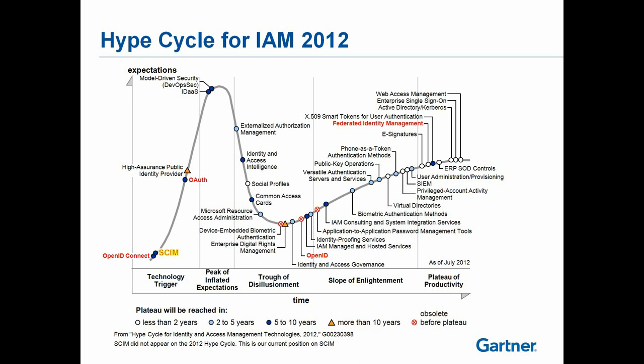You can see where OpenID Connect, SCIM, and OAuth are on the Hype Cycle — really early days, lots of promise, but quite a bit of maturity that must occur.